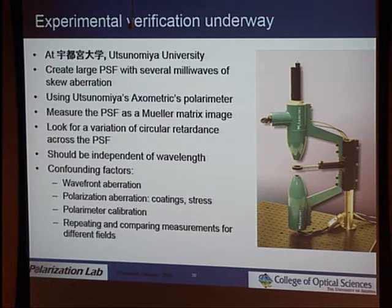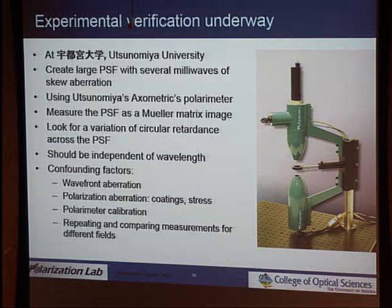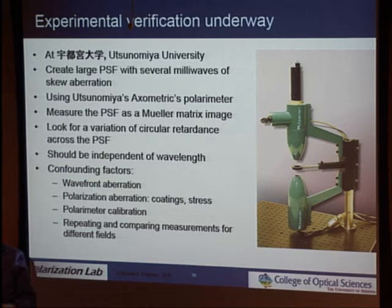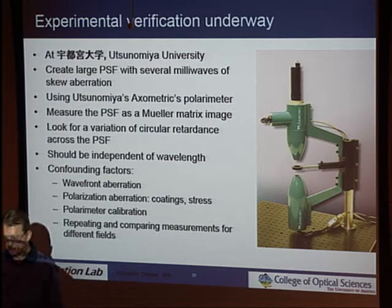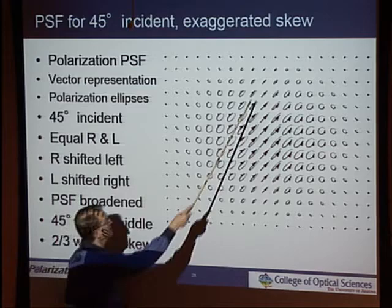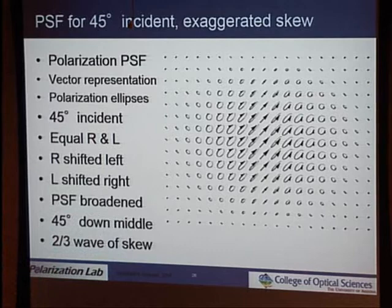For lenses there is also diattenuation — the S and P transmission coefficients are a little different, maybe almost half a percent at the edge of the lens, and that is radially oriented. It creates a PSF in the cross-polarization that has four islands. The effects of diattenuation, AR coating phase shifts, and skew aberration all have different effects on the PSF, just as coma and astigmatism have different effects. Diattenuation does not make the PSF look like the derivative form; it causes rotation with a different symmetry. We don't give up the measurement because there are multiple things going on.